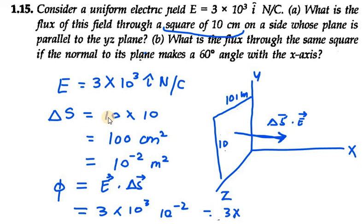It will be positive 1 because 3 minus 2 is 1, so the final answer is 30. It will be 30 Newton meter square per coulomb. This is the electric flux through this square.